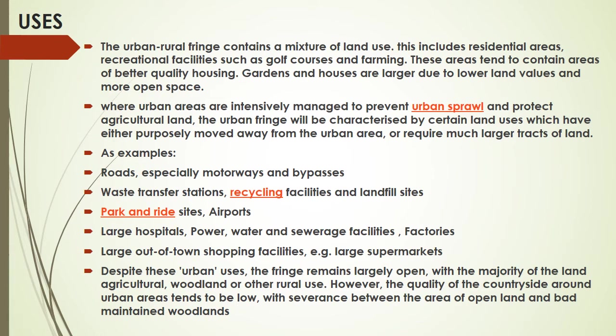Despite these urban uses, the fringe remains largely open with the majority of land being agricultural, woodland, or other rural use. However, the quality of countryside around urban areas tends to be low, with severance between areas of open land and poorly maintained woodland.